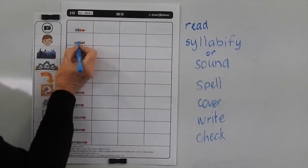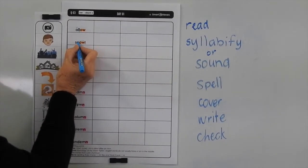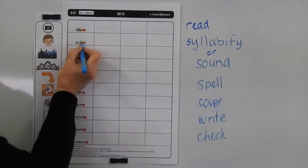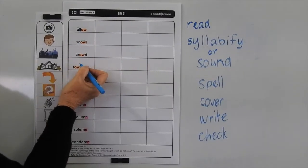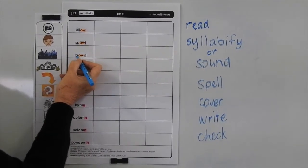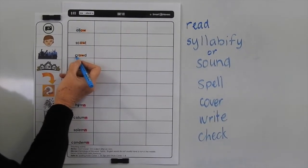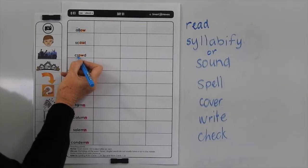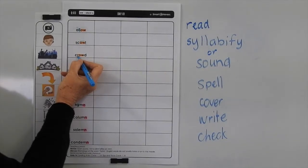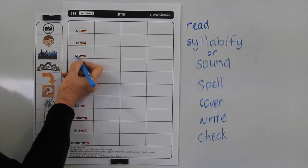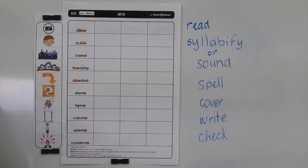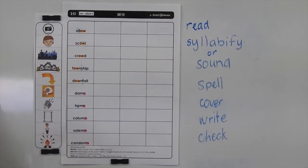We know because this C is followed by an O, we're giving it its hard sound, K. Same with this one — it gets a hard sound, K, because the letter after it is an R. So we know that if a C is followed by an A, O, U, L, or R, it will have its hard sound, K.